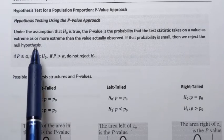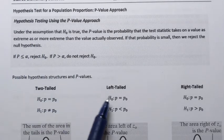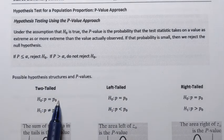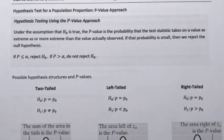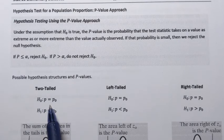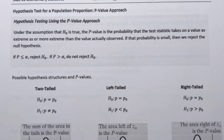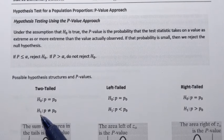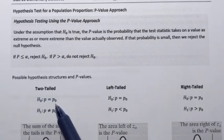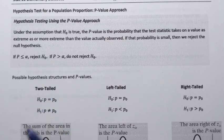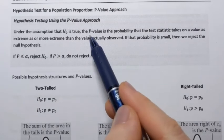We always start by assuming that the null hypothesis is true — that the population proportion equals a certain value. Then we determine how likely it is to obtain a sample proportion like that, or anything more extreme, from a population whose proportion is stated in the null hypothesis. If we find that it's unlikely, then we reject the null hypothesis. In other words, if the sample proportion is unlikely to come from a population with the given population proportion, we reject the null hypothesis. That probability is called the p-value.